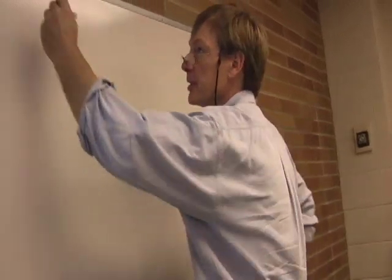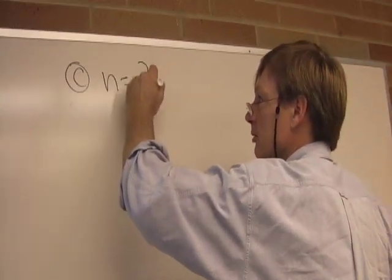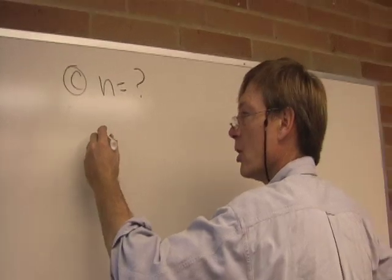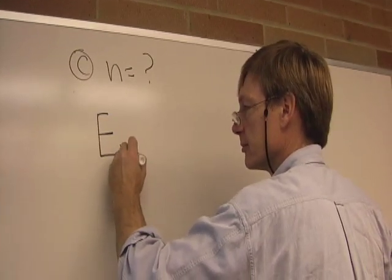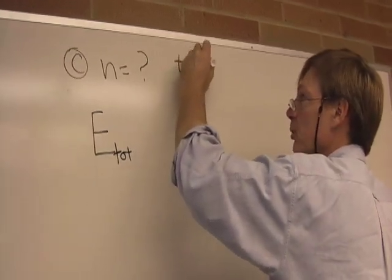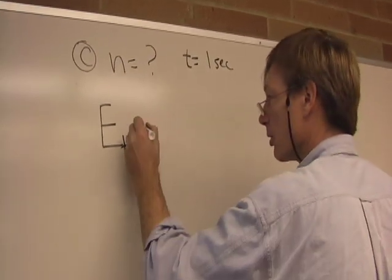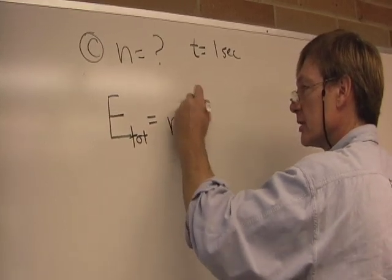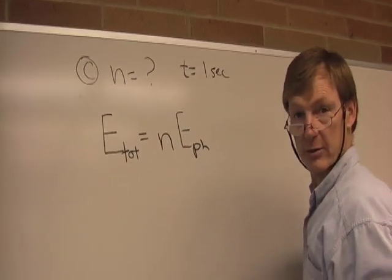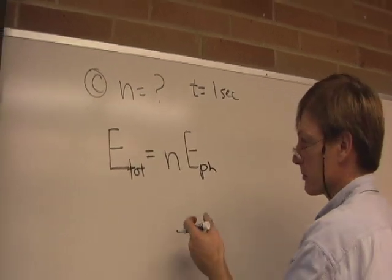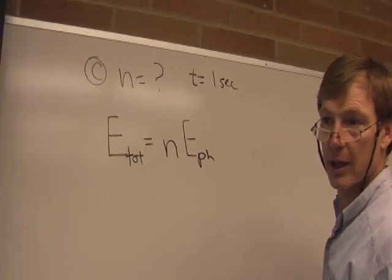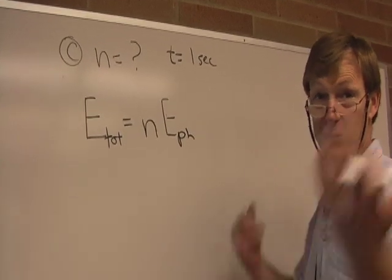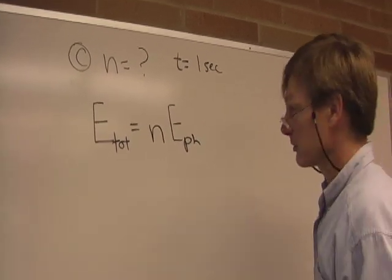So number of photons that are being emitted. The total energy, and let's say we're doing it for a time of one second. The total energy that's emitted by the bulb is equal to the number of photons times the energy per photon. If I got 10 to the minus 19 joules per photon, and I have two of them, then I have 2 times 10 to the minus 19. It's pretty much as simple as that.